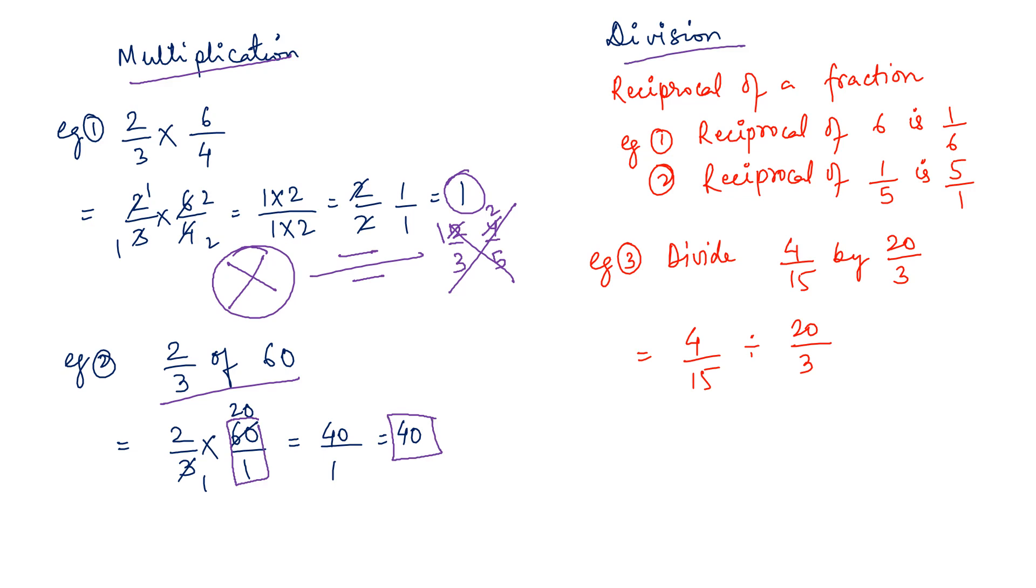For division you need to know the reciprocal or inverse. Reciprocal is also called as inverse means ulta. So reciprocal of 6 is 1 by 6 and reciprocal of 1 by 5 is 5 by 1. You have to remember. Now reciprocal of 2 by 5, its reciprocal will be 5 by 2.